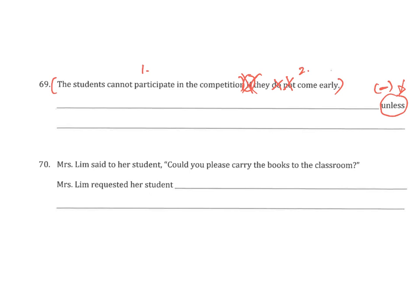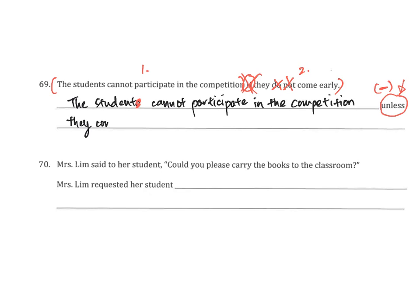So let's transcribe that into the answer. The students — and be very careful here, 'students' with an S, don't leave the S out — cannot participate in the competition, unless they come early. Be very careful that you cancel out 'do not', because 'do' cannot fit into the answer either. 'Do not' travel as a pair, they get cancelled as a pair. Done, question 69.